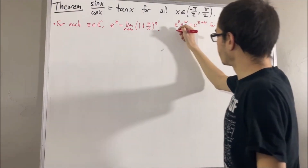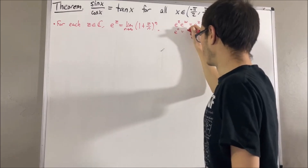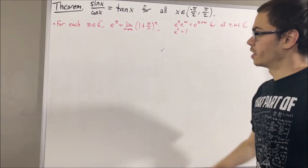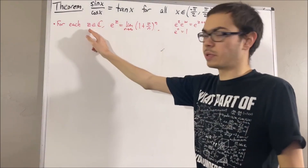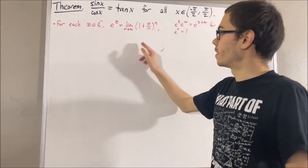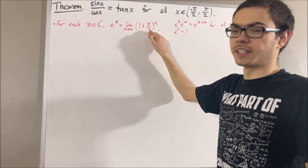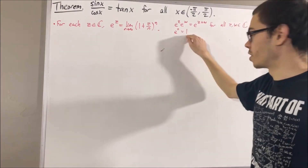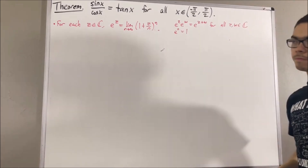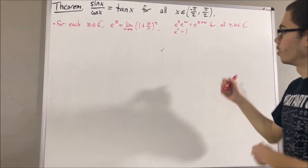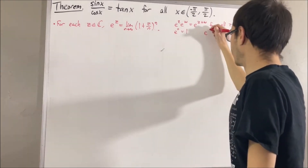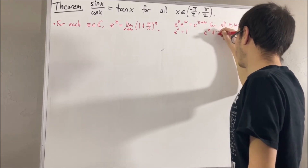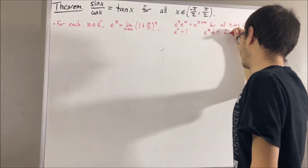We also know that e to the 0 is equal to 1, because if we take z to be 0, then this sequence is a constant sequence of 1s, which converges to 1. We also know that e to the z is not equal to 0 for all complex numbers z.